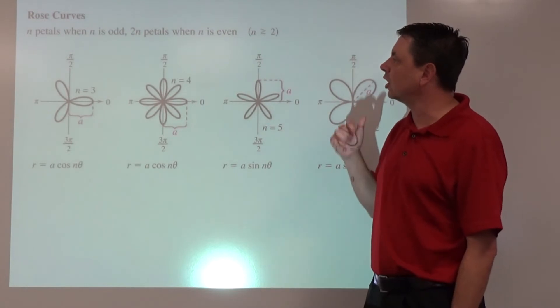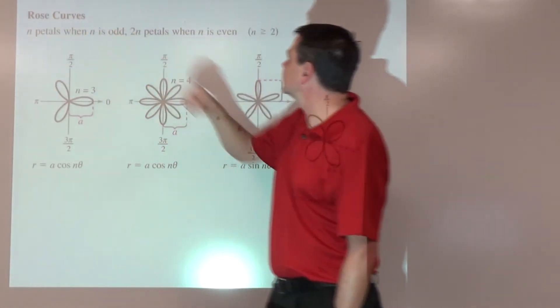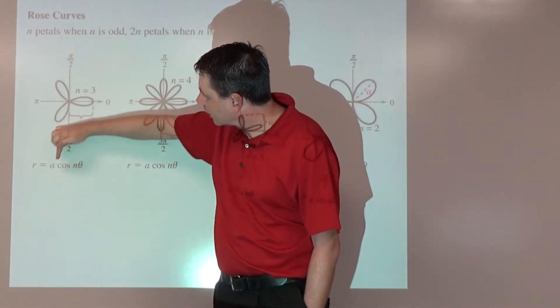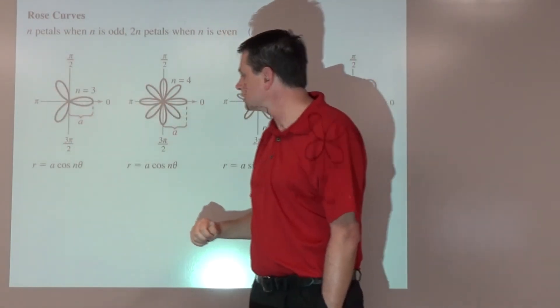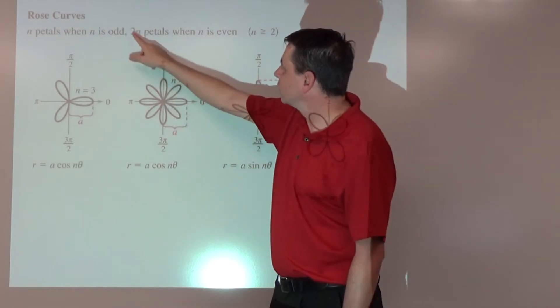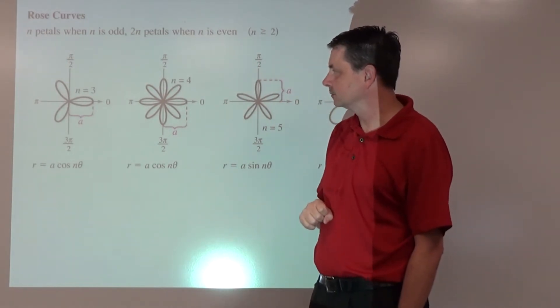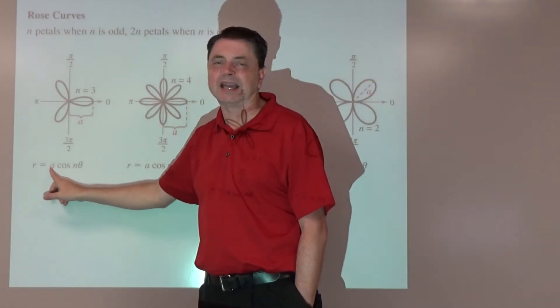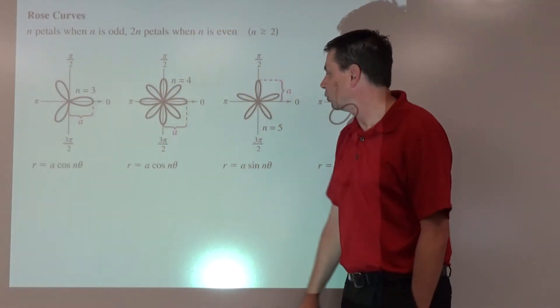Other ones are rose curves. A rose curve has n number of petals when n is odd. Something like r equals cosine 3 theta. When n is odd, it's going to have that many petals. However, when n is even, so cosine 4 theta, it will have 2 times n number of petals. You can see it has 8 petals. The distance from the origin to the tip of a petal is going to be given by the absolute value of a.